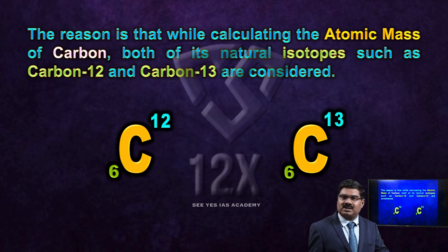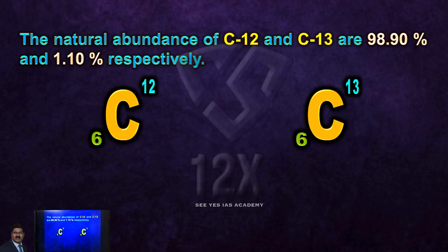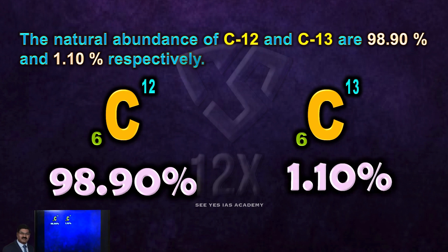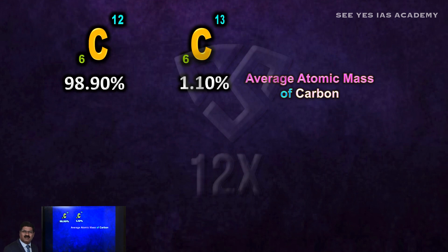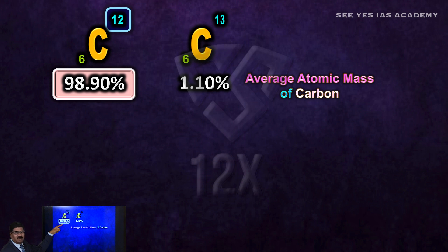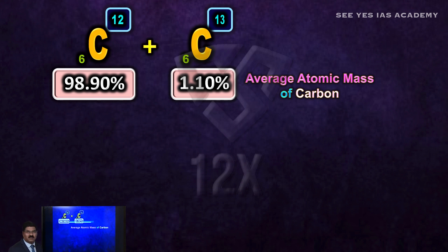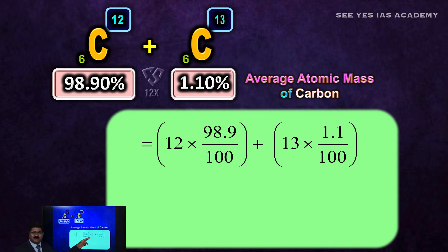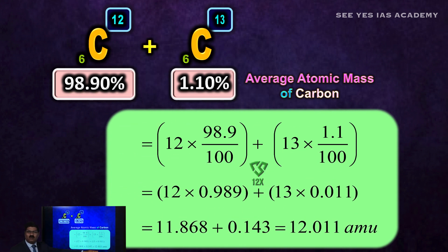Carbon has two isotopes: C-6-12 and C-6-13. The natural abundance of C-12 is 98.90% and the natural abundance of C-13 is 1.10%. Therefore, the average atomic mass of carbon equals 12 × 98.90% + 13 × 1.10%, which gives an answer of 12.011 amu.